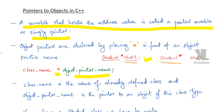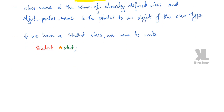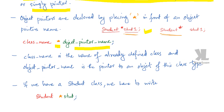So here we write pointers to objects. The class name is the name of an already defined class — for example the student class. The object pointer name is the pointer to an object of this class type.